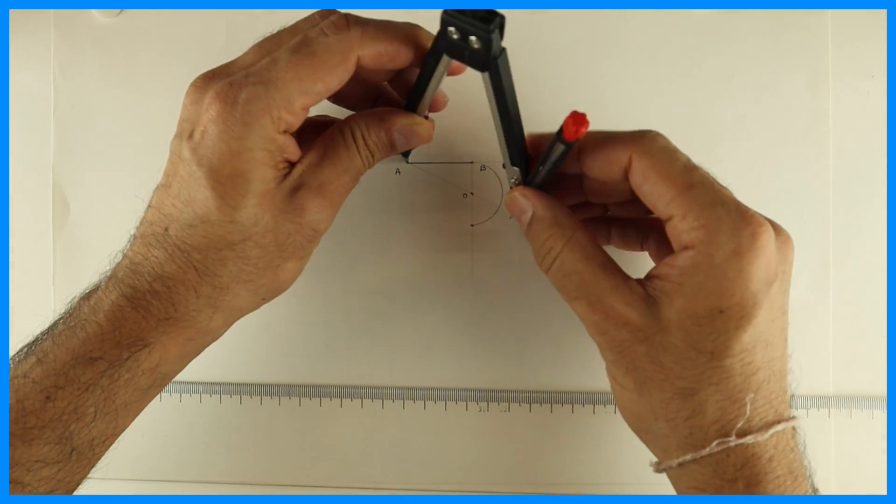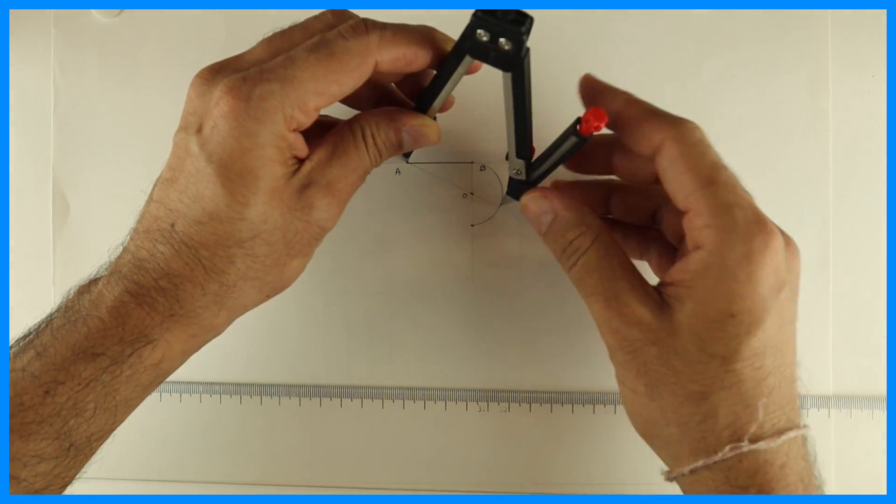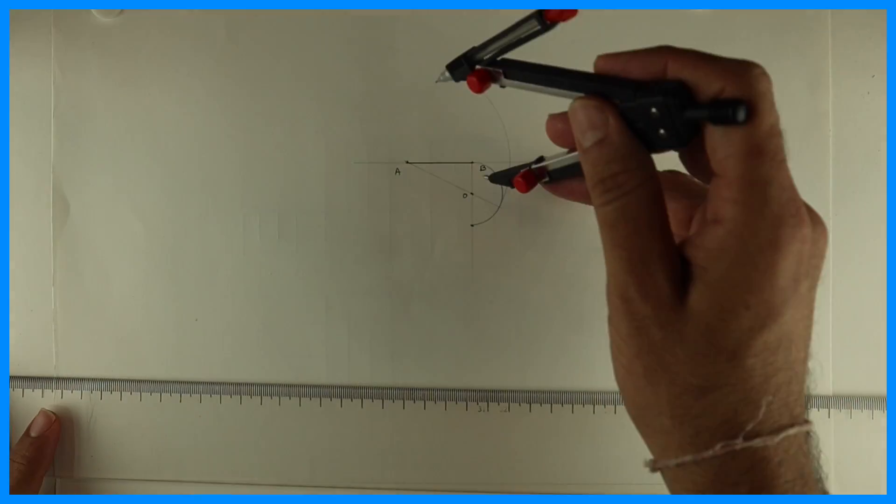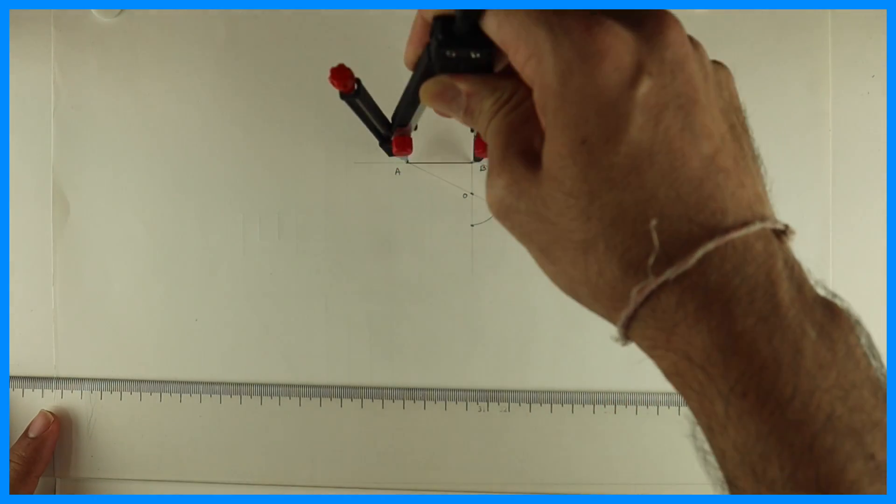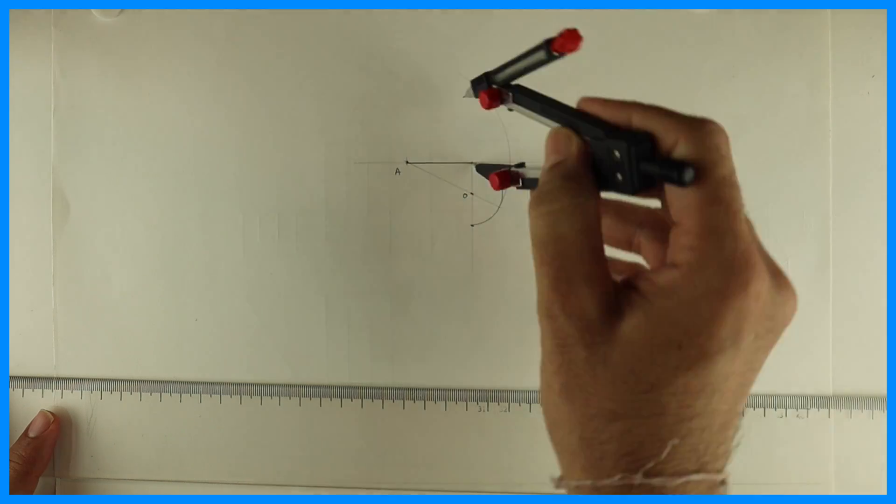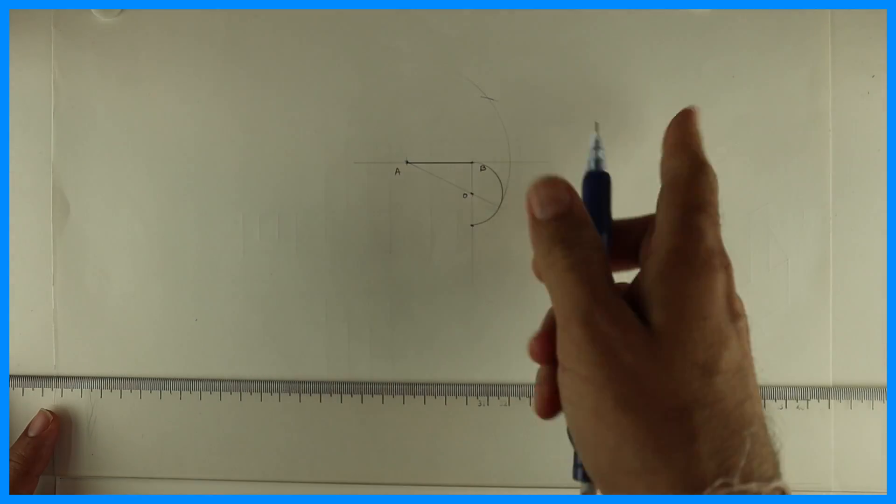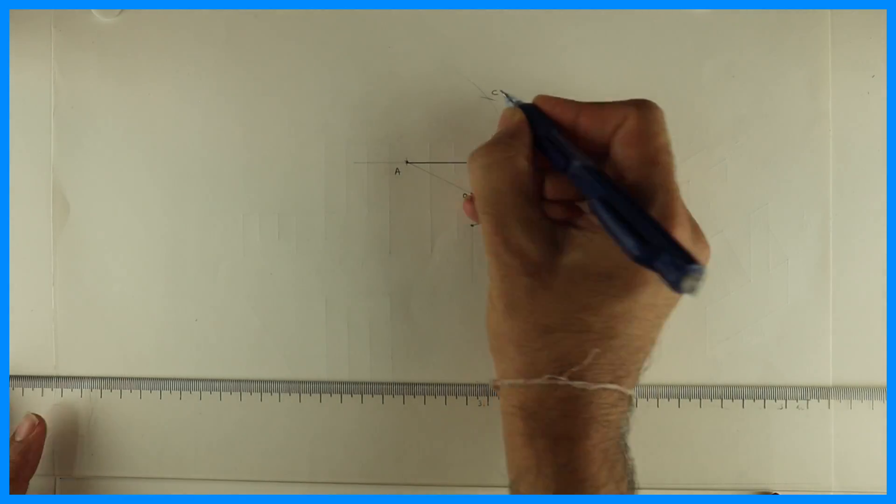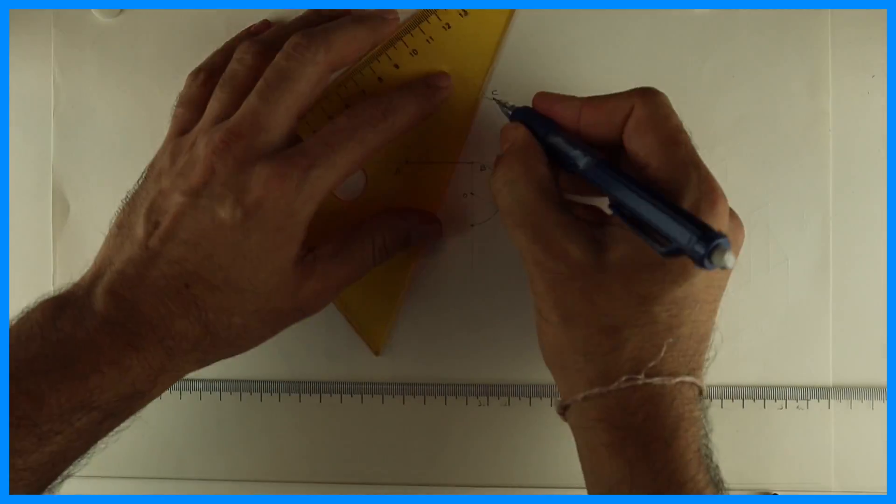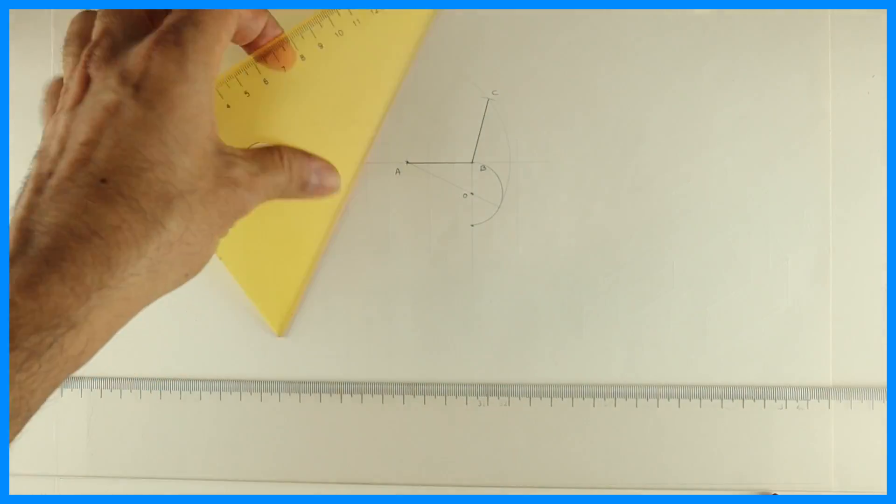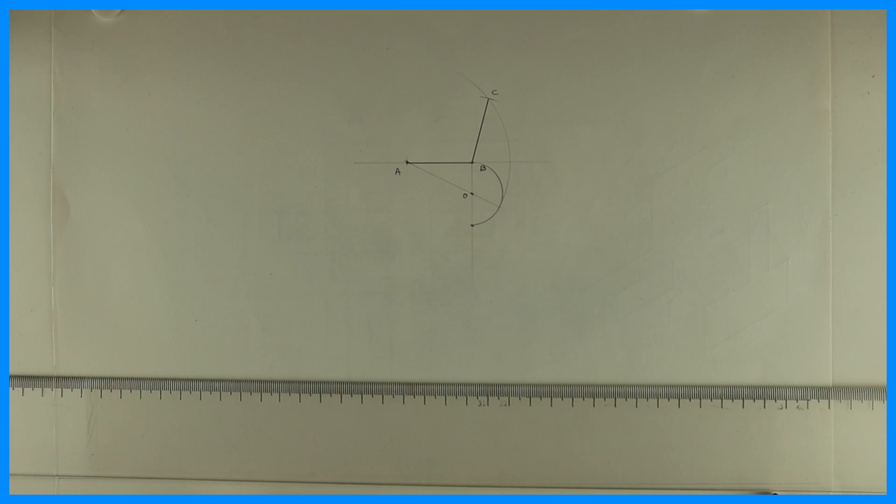So this distance what you get, that is a diagonal of a pentagon. Then what I have to do, then I have to take side AB and you cut here. So this is point C. So we got one side BC.